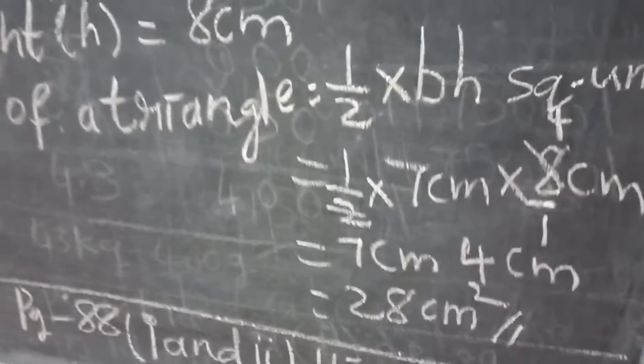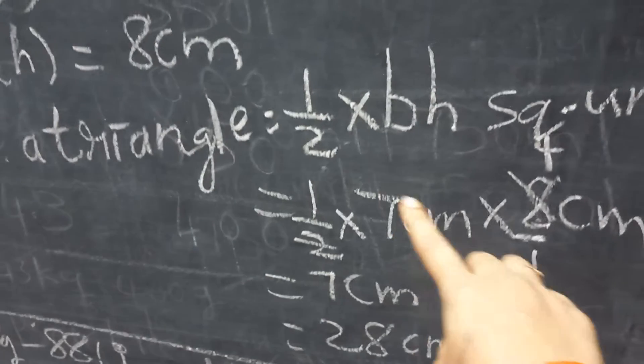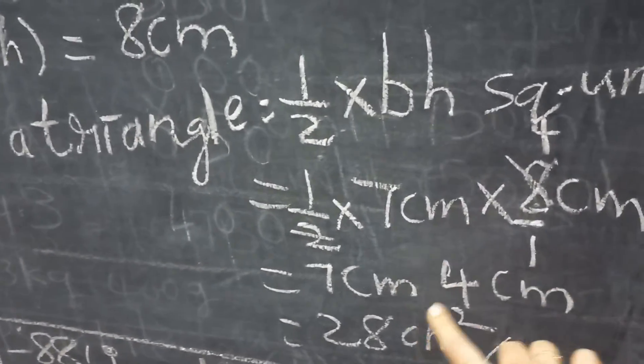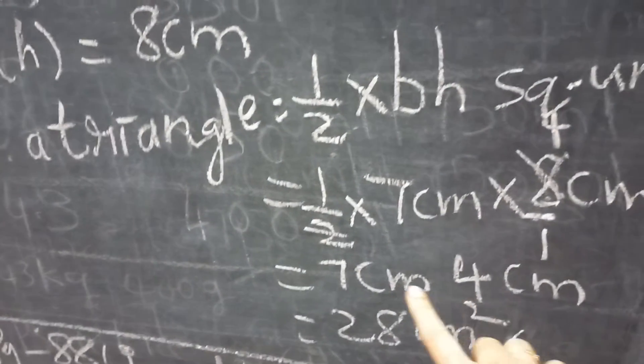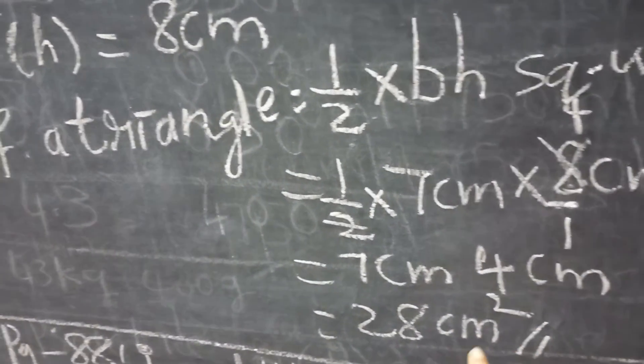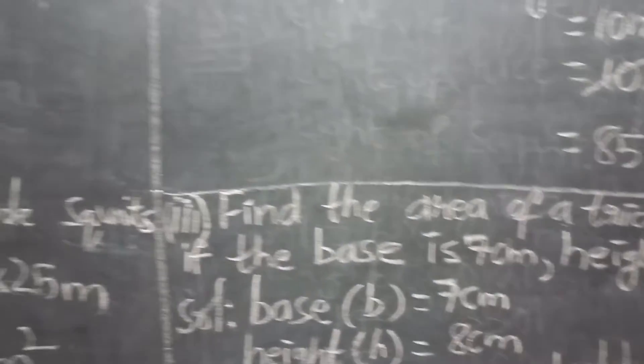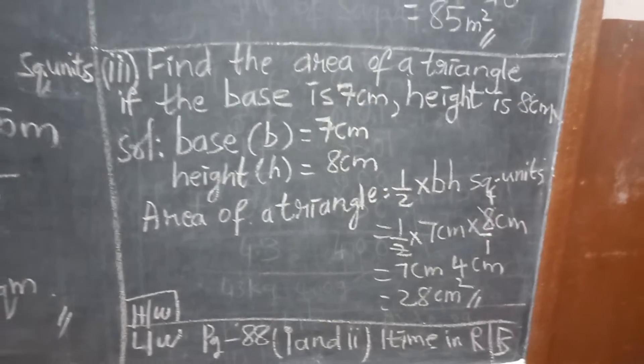Half into base. Base के place में 7 लिखें. Height के place में 8 centimeters. Now, two table में, eight कितने times है? Four times cancel हुआ. बच्चे को ना भी, seven थे seven, four is the four. Centimeter into centimeter, centimeter square. Seven fours are 28 centimeters. Centimeter square.